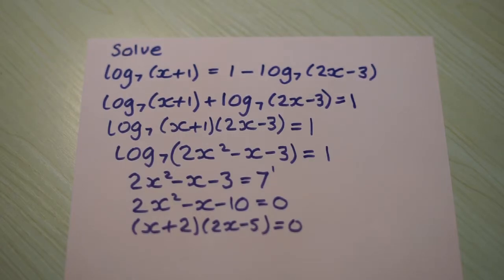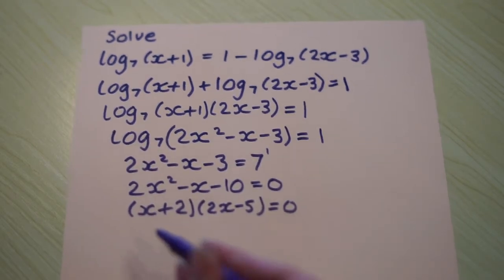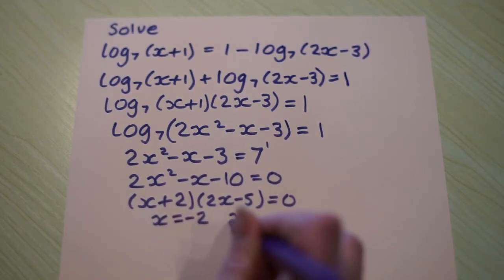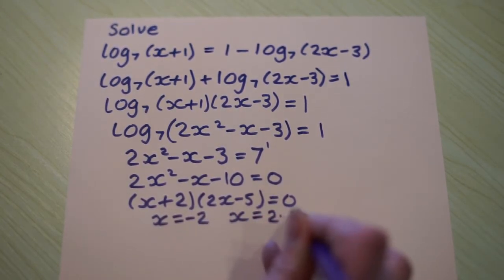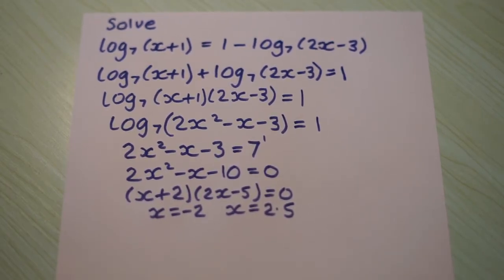So here it is factorised and we can see that the solutions would be x equals negative 2 and x equals 2.5.